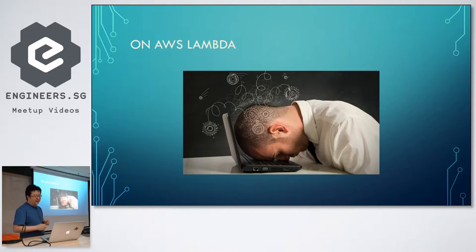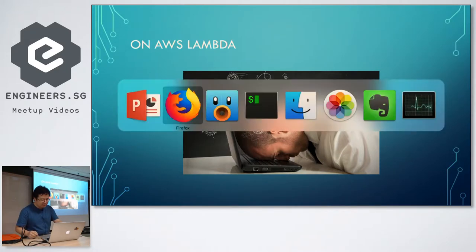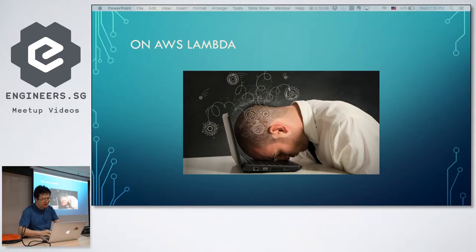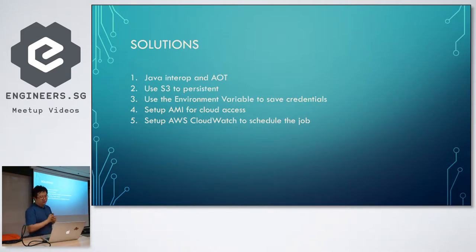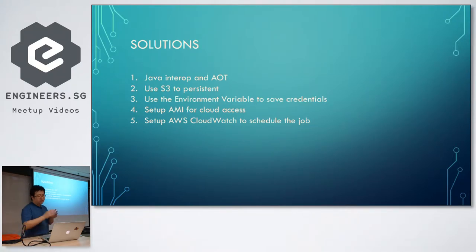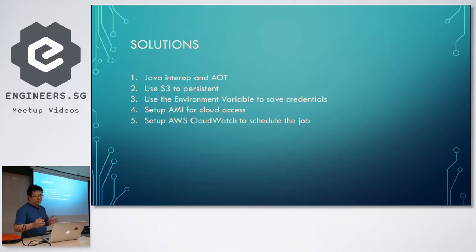I saw AWS Lambda and started thinking about how difficult it would be to move Clojure code to AWS. If you look at the code, it was previously written in Java. I did some research and found it's quite easy to move all my code into AWS Lambda. There are around five problems that need to be solved. The first is Java interop — because AWS doesn't have a native Clojure solution, but it has a Java solution. Clojure provides very strong ways to interop with Java, so that's not a problem.